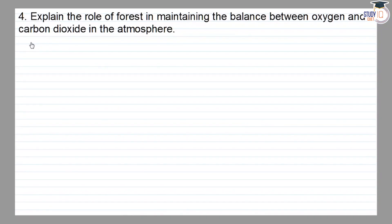Class 7 NCERT Chapter 17, Question 4: Explain the role of forest in maintaining the balance between oxygen and carbon dioxide in the atmosphere. Answer: